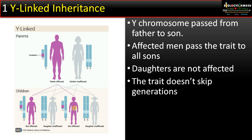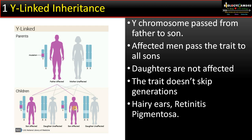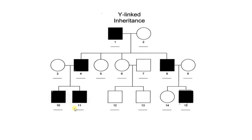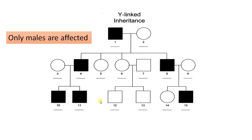Y-linked inheritance doesn't skip generations. Examples include hairy ears and retinitis pigmentosa. In the pedigree chart, the affected father passes the trait, and in every generation all males are affected — males 4, 8, 10, and 11 — while daughters are completely unaffected.